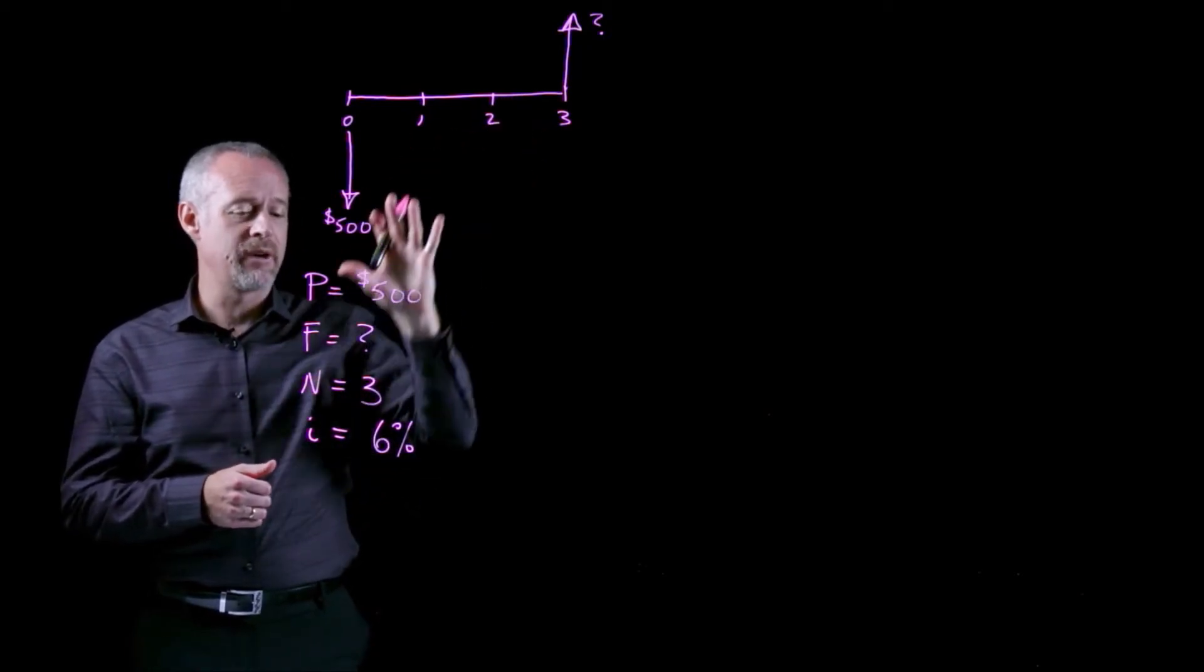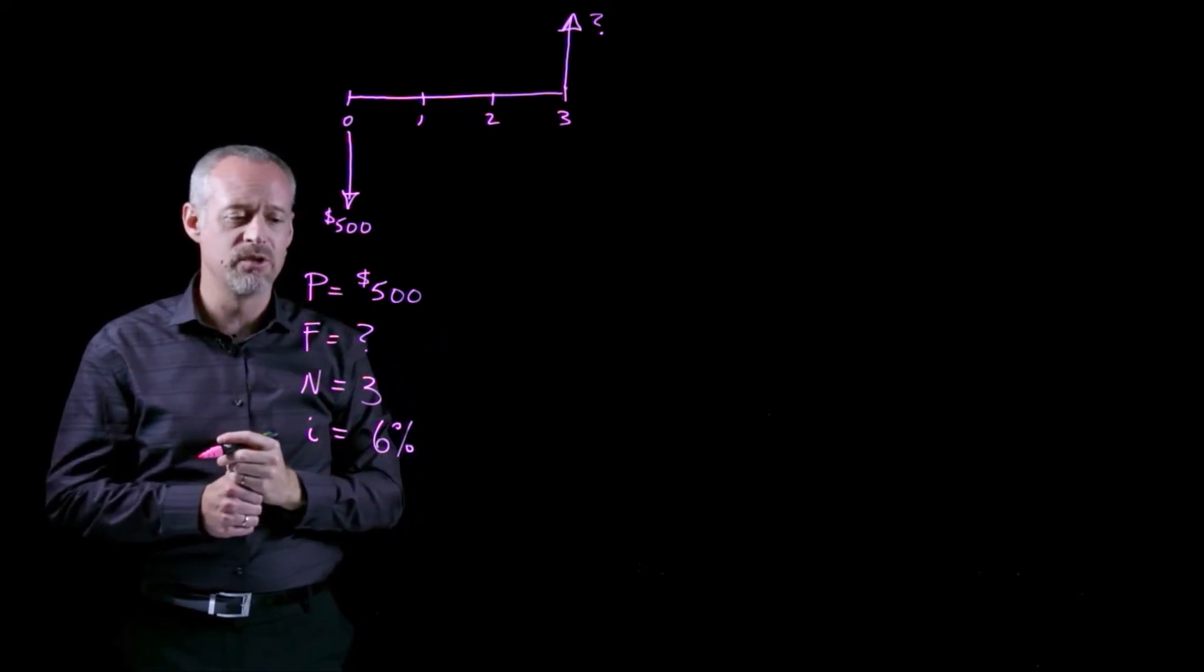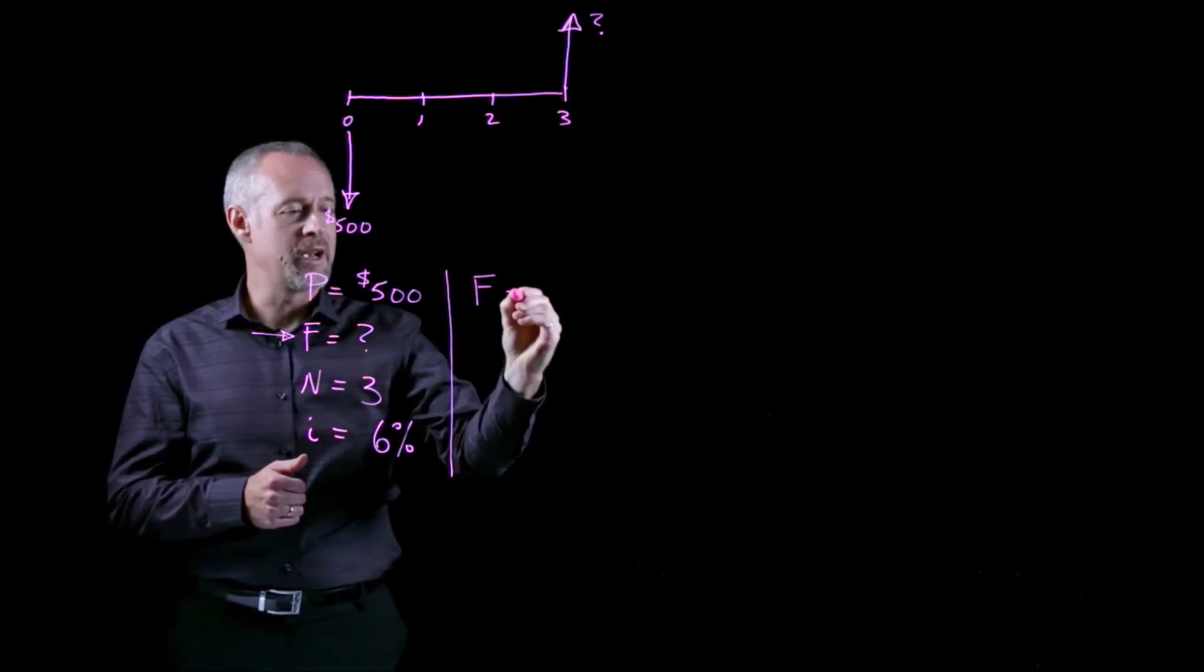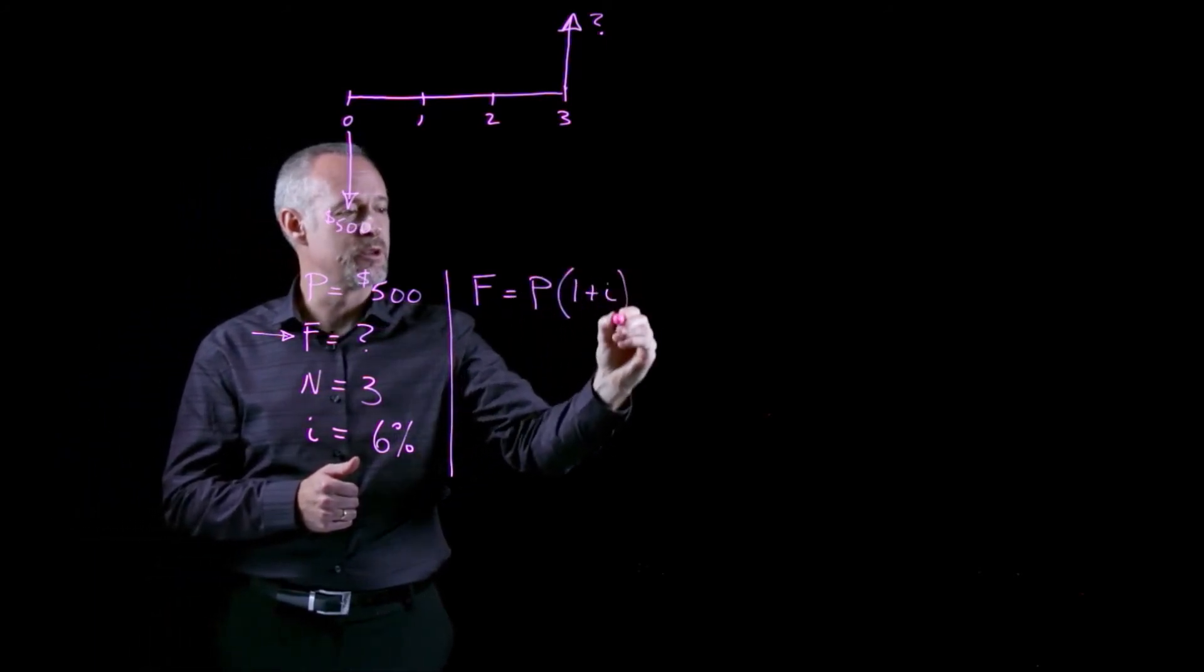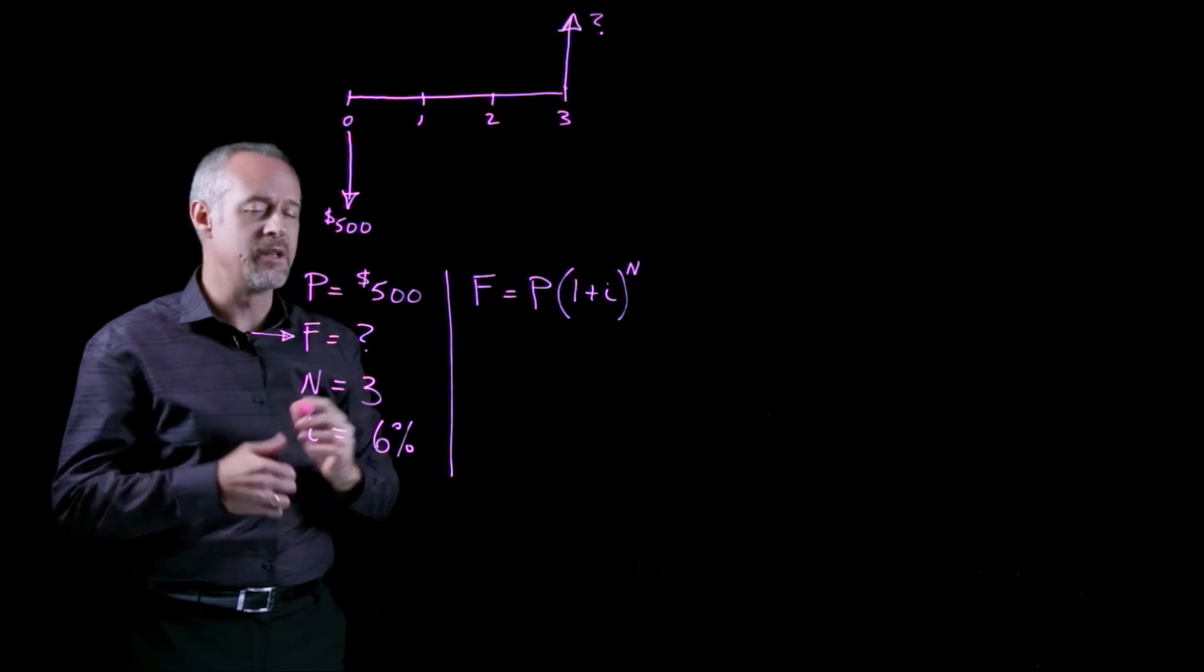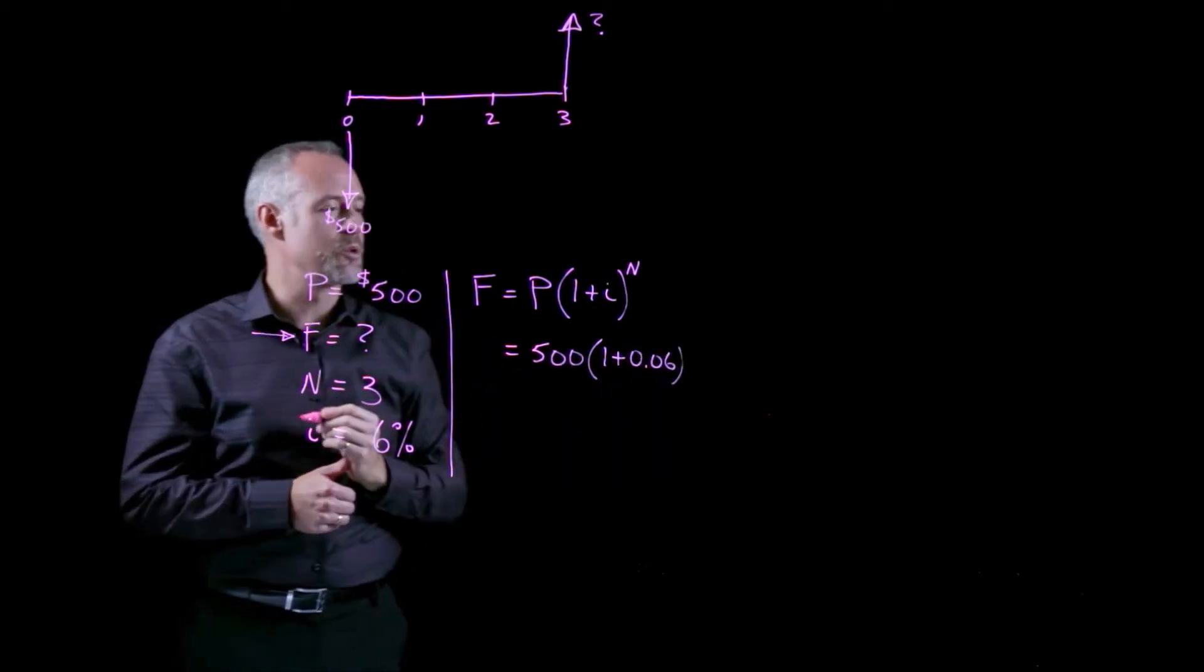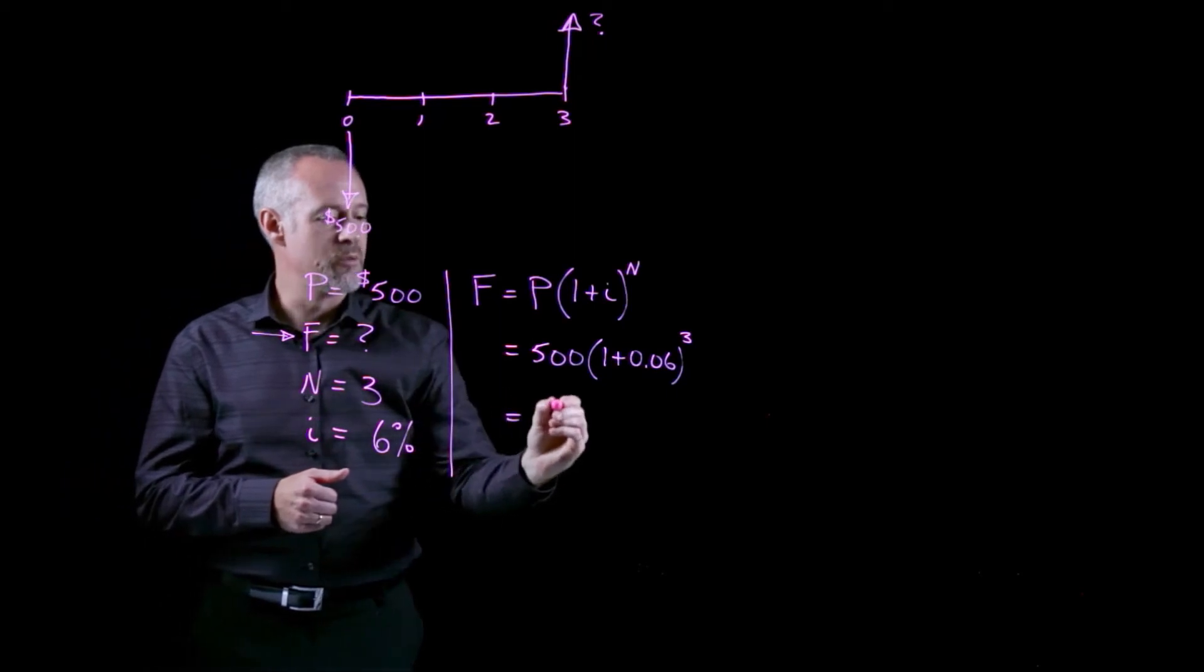Now that we've drawn the cash flow diagram and identified the variables, the next thing is to say, what formula can I use to solve for what I need to know? With a little bit of practice, you'll realize that for this type of problem, the future value that we'd like to calculate is simply the present value times 1 plus the interest rate raised to the power of the number of periods. We've already covered this in the compound interest videos we've looked at. I can plug these numbers in and remember that the interest rate of 6% is 0.06. The number of years is 3 years.